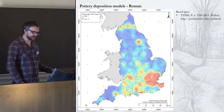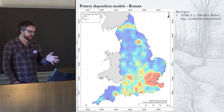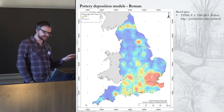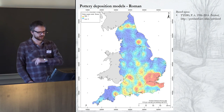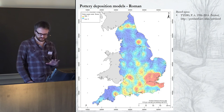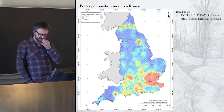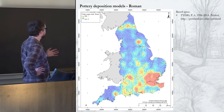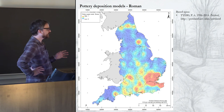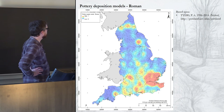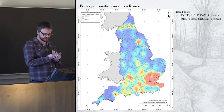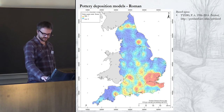This is also a relatively old dataset — the maps generally say 2004, the website says 2014, but it's probably about 10 years out of date. We can see that in the Roman period pottery seems to have been more widely used than in the Iron Age, but again with less in the north away from military sites and a few big towns.